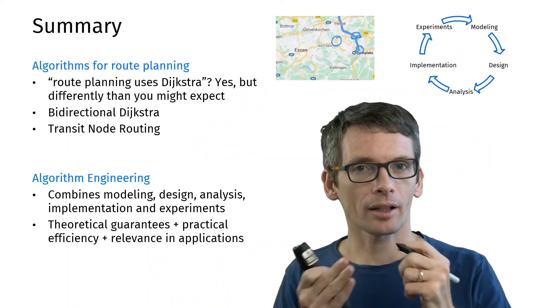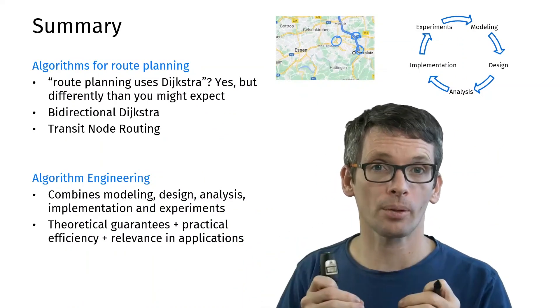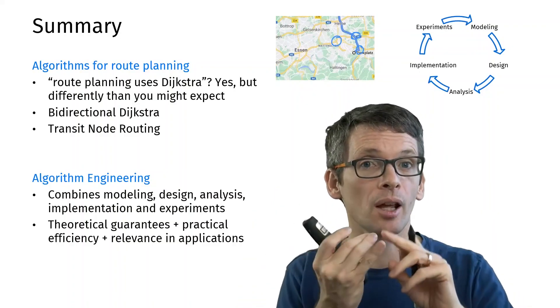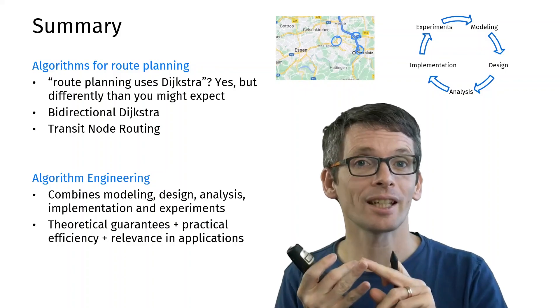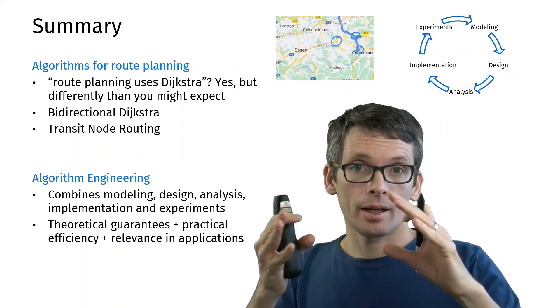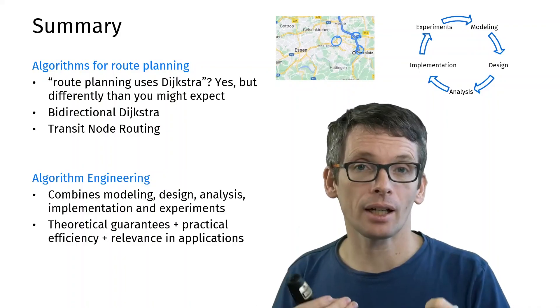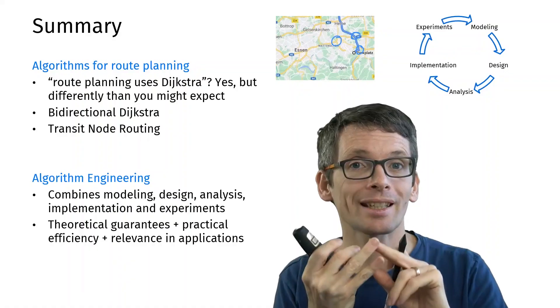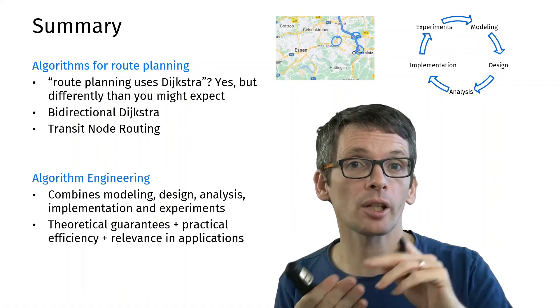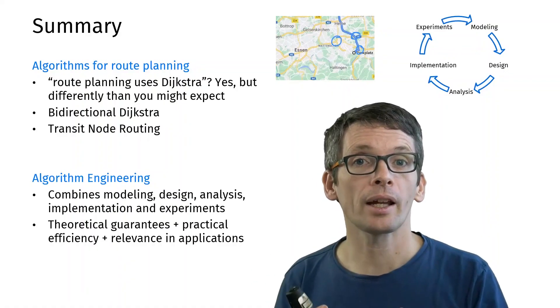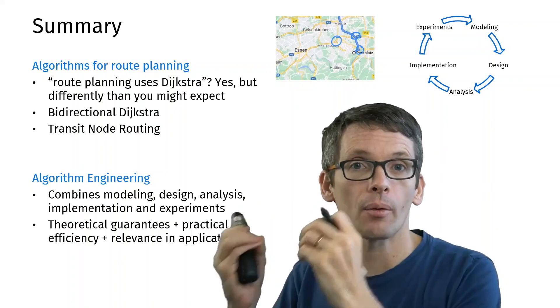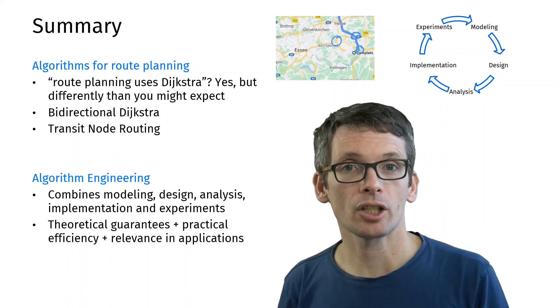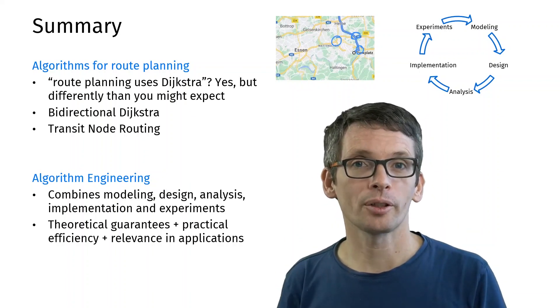What have we seen? Coming back to the question whether Dijkstra's algorithm is used for route planning. Yes, but there's much more to the story and we've seen a little bit of this. We've seen bidirectional Dijkstra, we've seen transit node routing. As a way of designing practical algorithms, we've seen algorithm engineering where we do modeling, design, analysis, implementation, and experimentation in a cycle, and in that way design algorithms with good theoretical guarantees, practical performance, which are also relevant in applications. And that's all for today. See you next time.